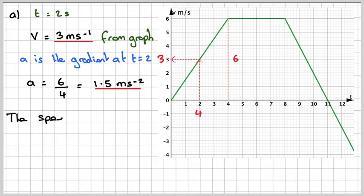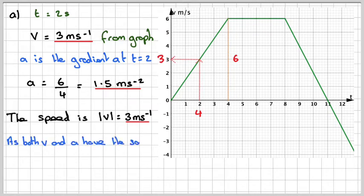Now the speed is just the magnitude of the velocity. So the magnitude of 3 will be 3 itself. So the speed at this point is here. Now because the velocity and the acceleration are both positive, then at this particular point the speed is increasing.